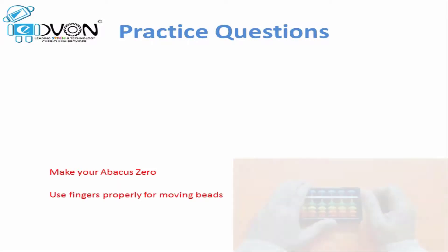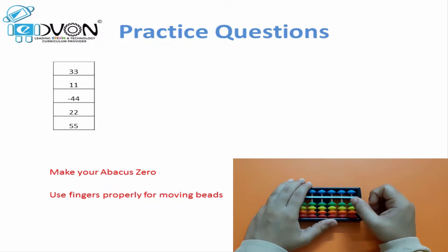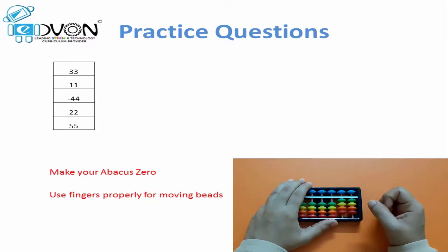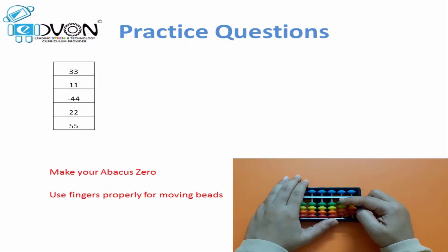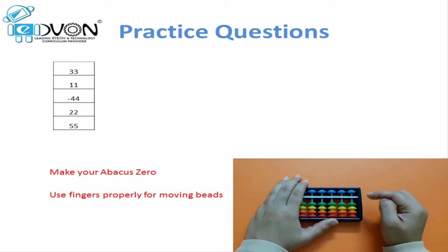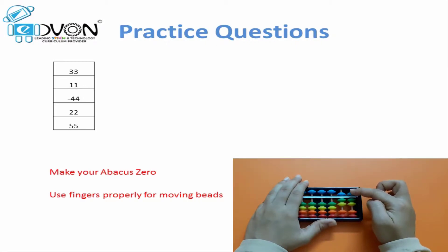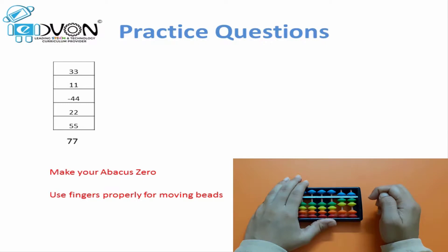Let's start our first question: 33 — three beats up to touch the calculation bar on both the rods. Plus 11 — we will move one more lower beat up on both the rods. Minus 44 — we will move four lower beats down on both the rods. Plus 22 — two more lower beats up on both the rods. Plus 55 — we will move upper beat down to touch the calculation bar on both the rods. As a result, we get 77 — upper beat and two lower beats touching the calculation bar on tens rod and units rod.